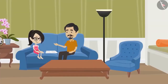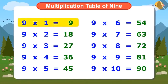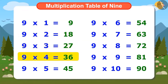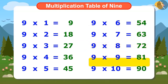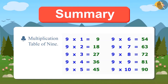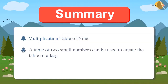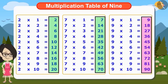Now learn the table of 9 so that you do not have to write it again and again. Let us learn by singing the multiplication table of 9: 9×1 is 9, 9×2 is 18, 9×3 is 27, 9×4 is 36, 9×5 is 45, 9×6 is 54, 9×7 is 63, 9×8 is 72, 9×9 is 81, 9×10 is 90. Today we learned multiplication table of 9 and together we also learned that a table of 2 small numbers can be used to create the table of a large number. For example, Vandana used the tables of 2 and 7 to find the table of 9.